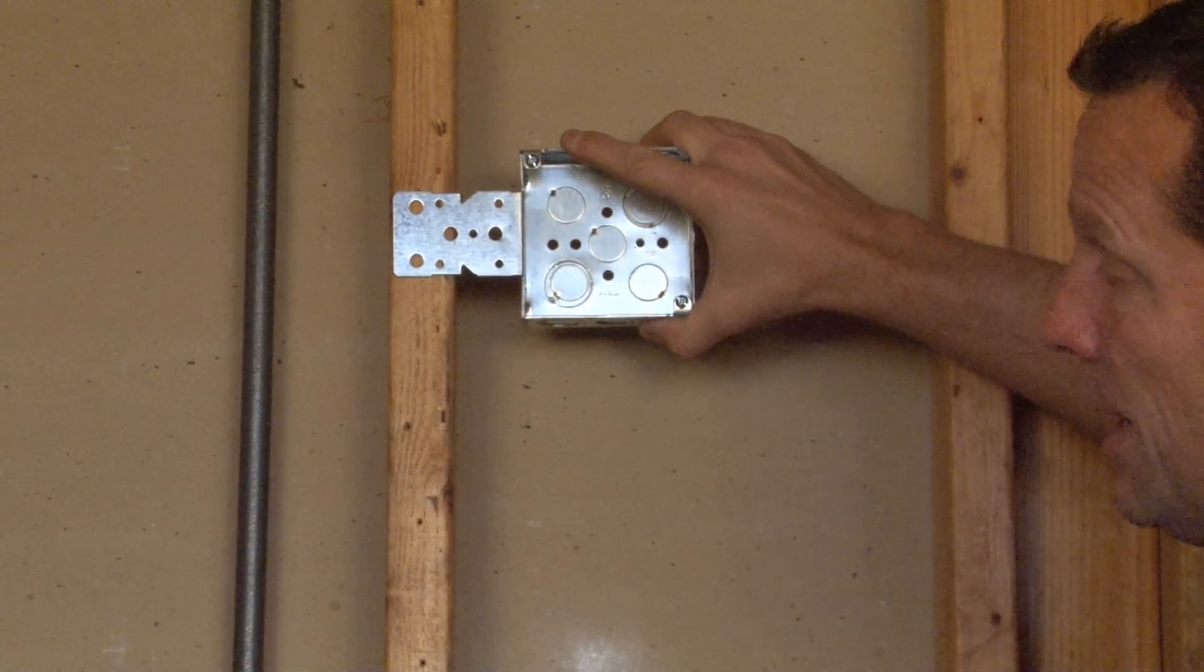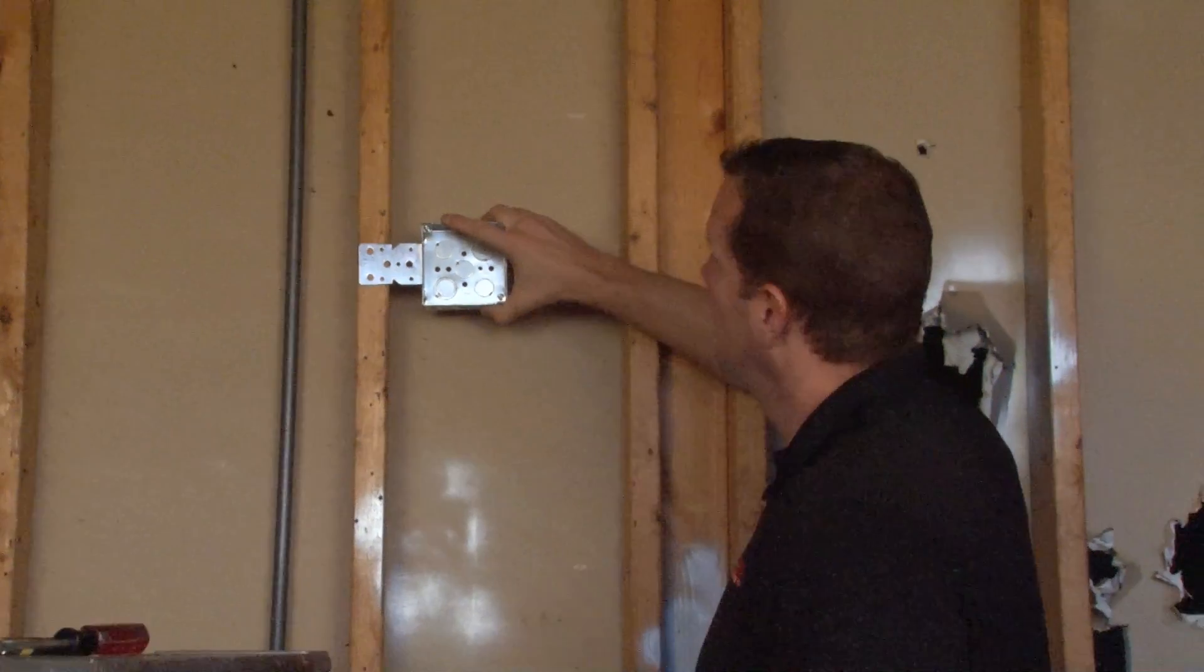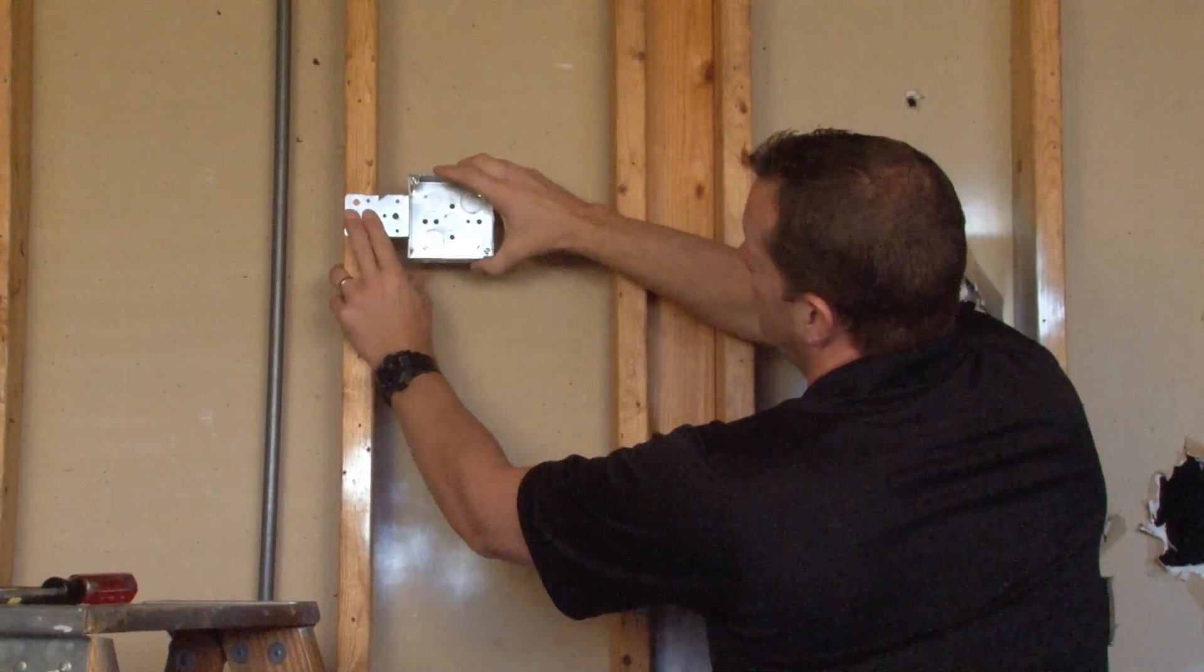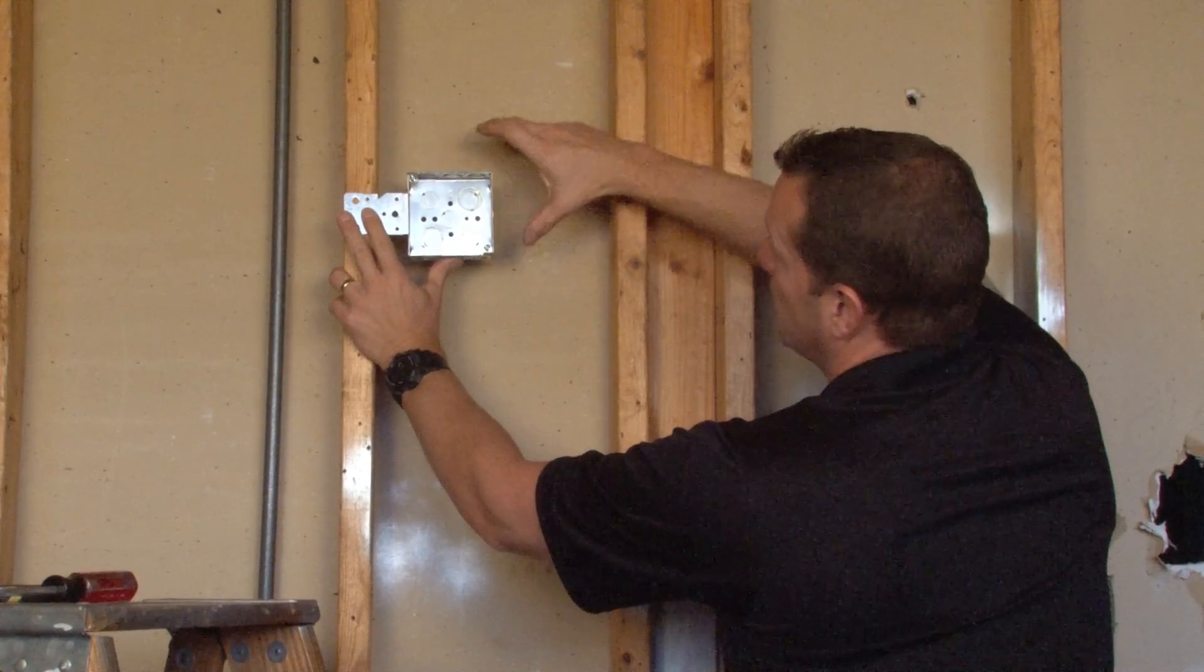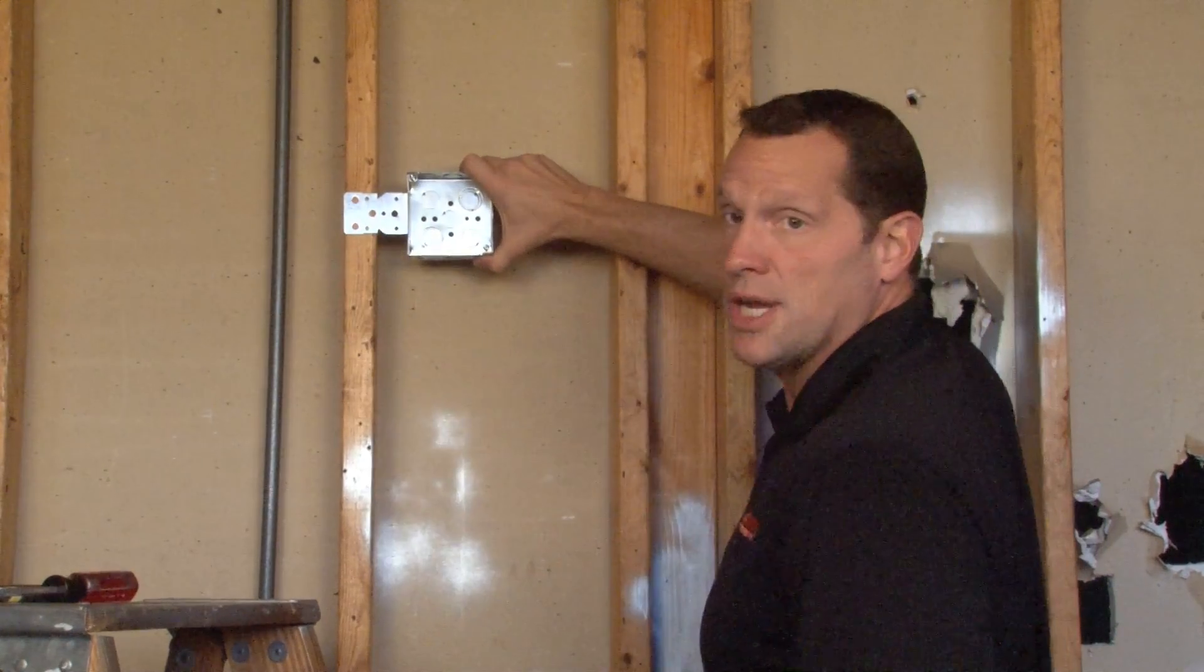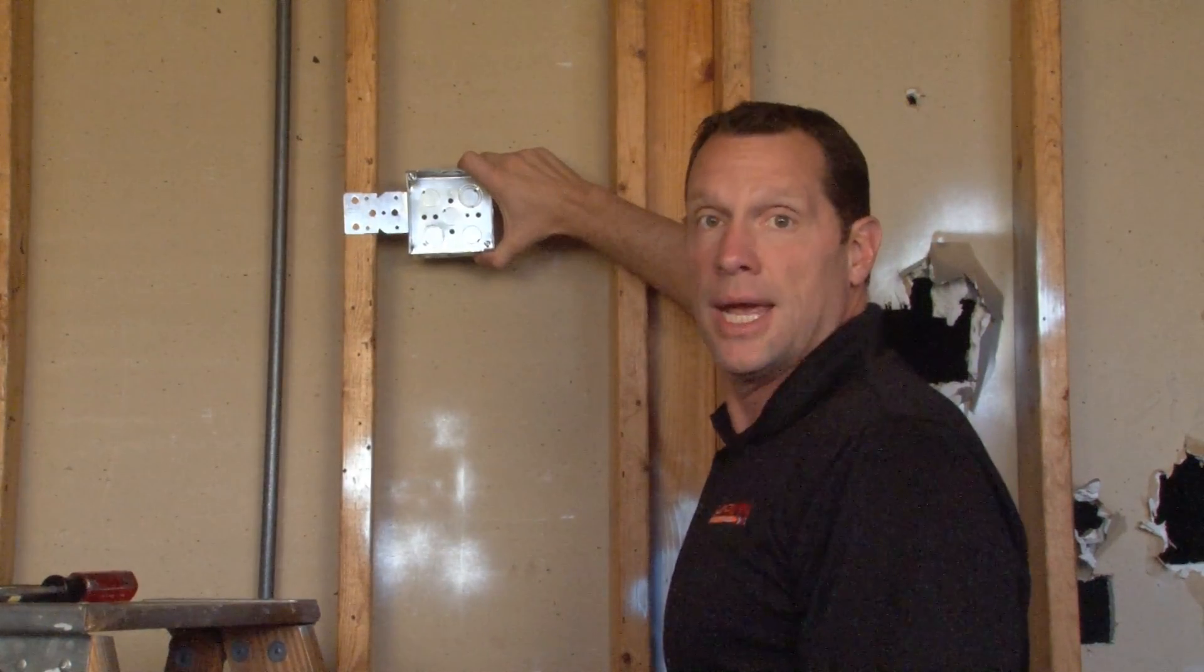The 4 inch square design comes complete with 832 screws and works with all standard 4 inch square device rings and covers.